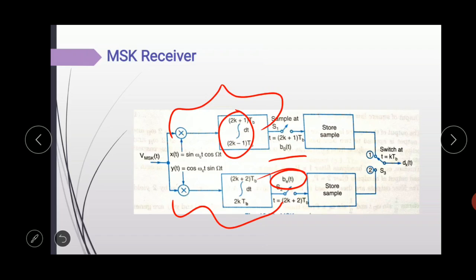At the end of each integration interval, the integrator outputs are sampled and stored. The switch S3, this one is the switch S3, will then switch between position 1 and position 2. It switches between the positions 1 and 2 to generate the original data stream. Here at the output, we get the original data stream or we can say modulating signal.